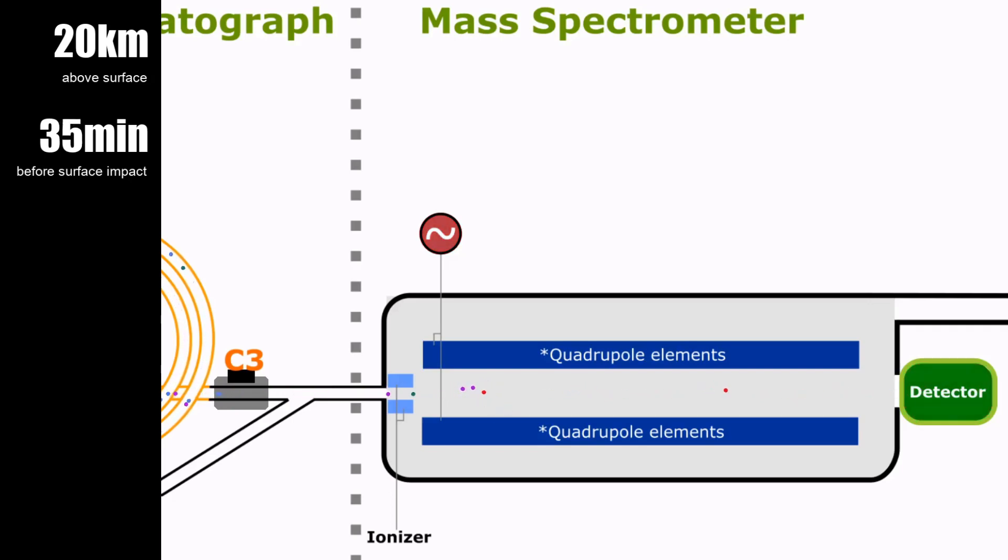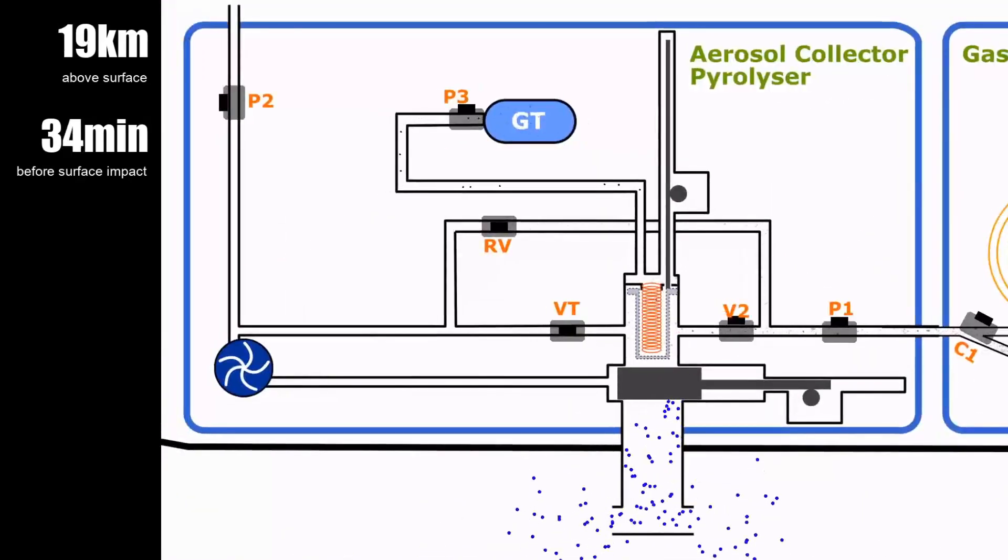At the end of this chain of instruments, we are able to determine the molecular composition in the gas product, which originally came from performing pyrolysis on the aerosol from the atmosphere. This entire process takes about 10 minutes to complete. 35 minutes before surface impact, while the GCMS was analyzing the first gas product, the ACP was being prepared for the second sampling of Titan's atmosphere at low altitude. This is an important step because comparing the chemical composition at both altitudes will help us build a model of the chemical reactions that are happening in the atmosphere.